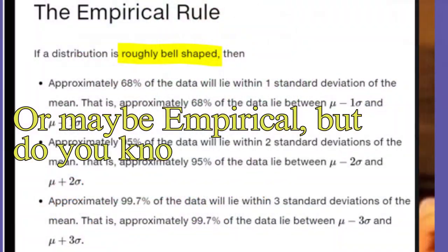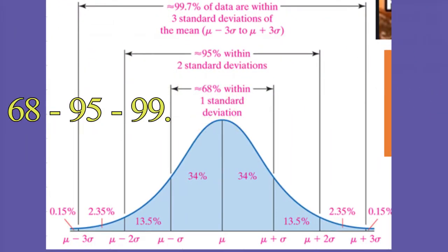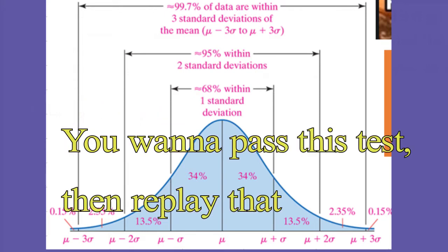So maybe empirical, but do you know the difference? Empirical rule, bell-shaped and symmetric. 68, 95, 99.7. You wanna pass this test, then replay that lesson.